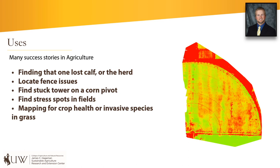As we've gone through this, you've probably thought of ways to utilize a drone — or you've already figured one out. There are a lot of success stories in agriculture. We work in big open areas with specialized situations. Some success stories include a rancher finding a lost calf they couldn't locate otherwise, saving time by sending a drone up to find where the herd is in a large paddock, locating fence issues by flying down fence lines, checking a hard-to-reach water tank, finding a stuck tower on a corn pivot, or identifying a stress spot in a field.